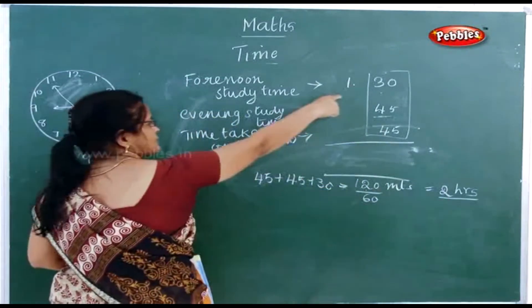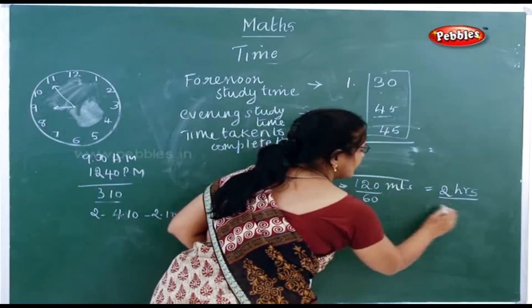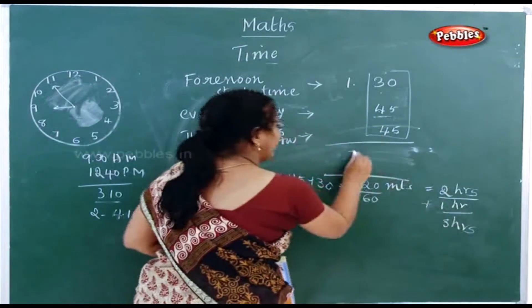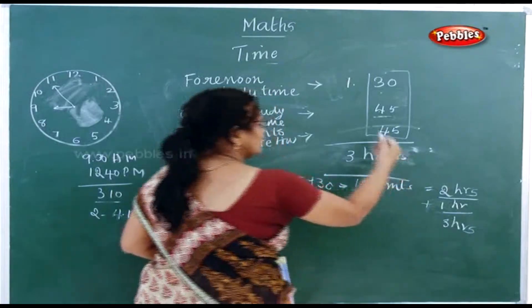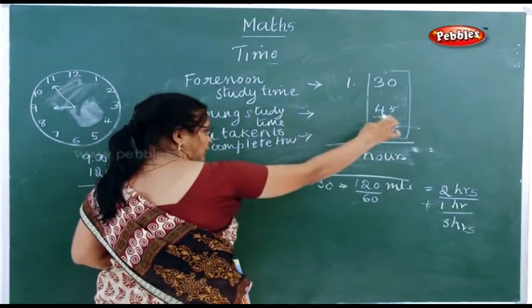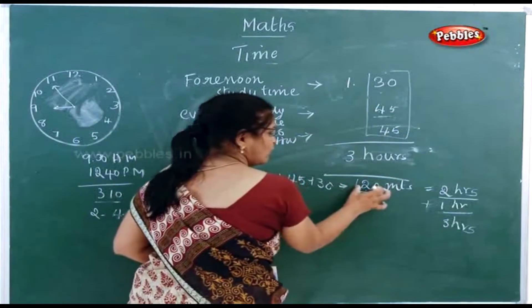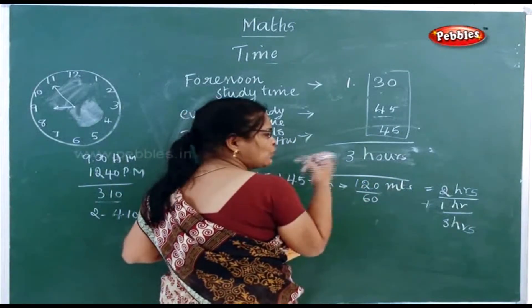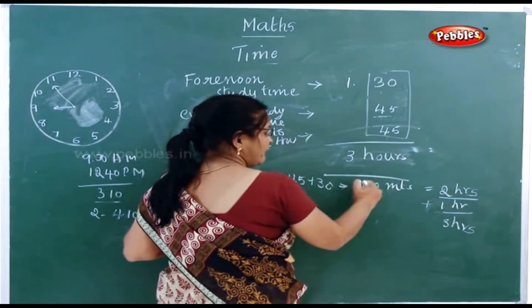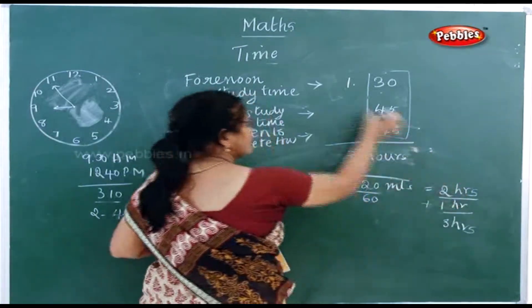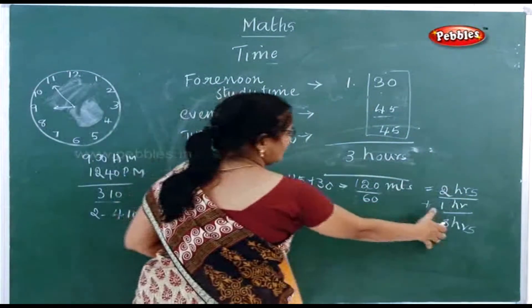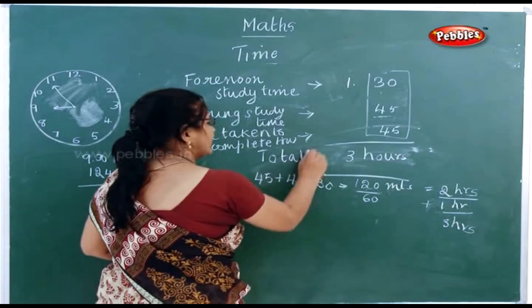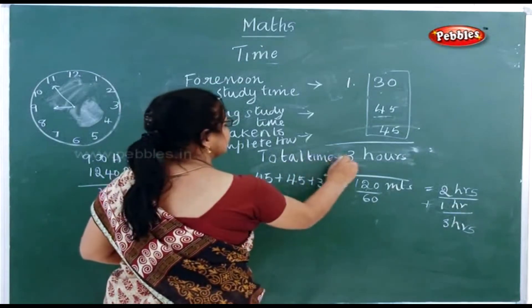Now this 2 hours plus the 1 hour from forenoon study gives you 3 hours. So the total time taken is 3 hours. To summarize: 30 + 45 + 45 = 120 minutes; 120 divided by 60 equals 2 hours; 2 hours plus 1 hour equals 3 hours total.